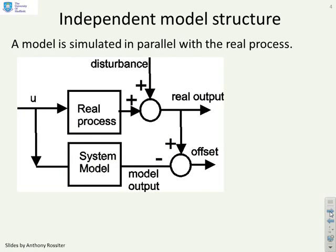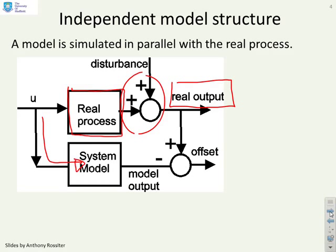Just a reminder then, an independent model structure is something like this. You have the real process, which does what it does and maybe has disturbances, and you will get a real output which we assume we can measure. Now in parallel with the real process, we simulate a system model and that gives us a model output. And what we do is calculate this offset signal as the difference between the real output and the output from our model.